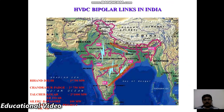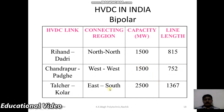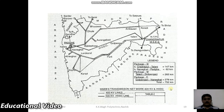This is the picture of HVDC bipolar links in India. We can observe the different regions. HVDC bipolar systems in India include: Rihand to Dadri with a capacity of 1500 MW over approximately 815 km; Chandrapur to Padge in Maharashtra state with a capacity of 1500 MW; and the longest HVDC line, Talcher to Kolar, with a capacity of 2500 MW over approximately 1367 km.